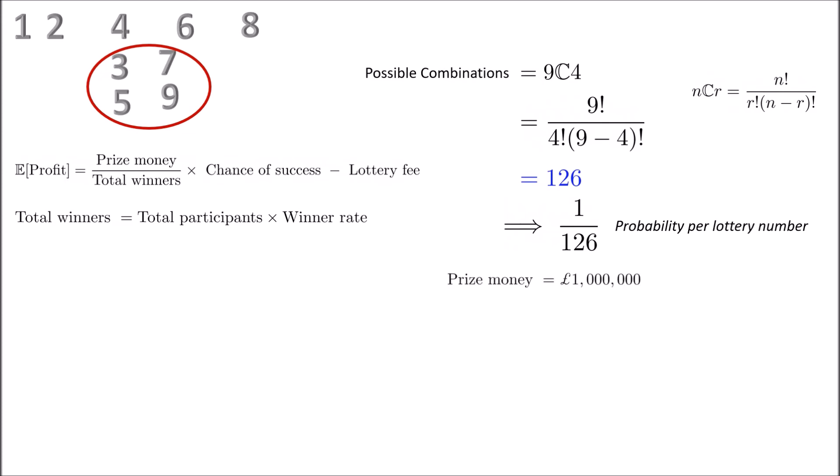Let's write down some of the details from the question. The total amount of prize money is £1,000,000. The chance of succeeding is 1 in 126 as we worked out from the above part. The lottery fee is £1. The total number of participants is 1,000,000.